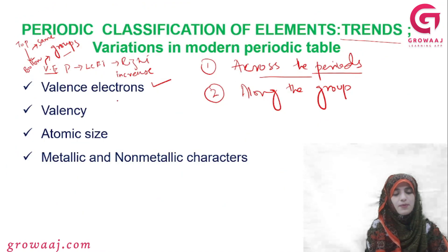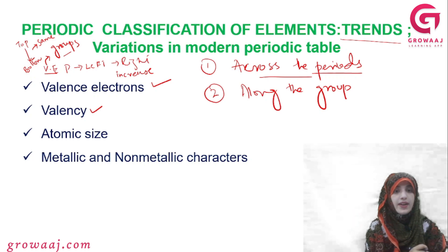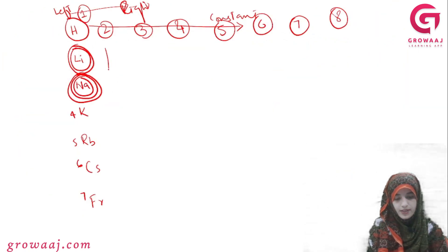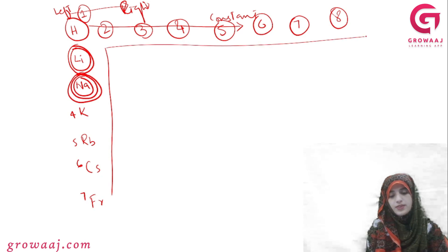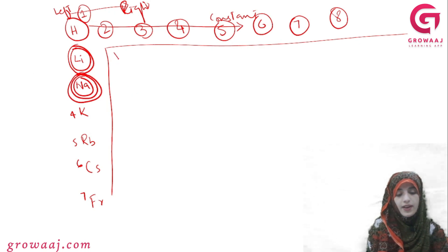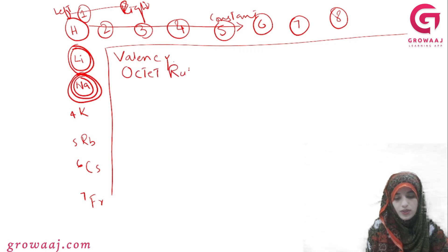So the valence electrons remain the same moving through a group, which is called valence. Now we will explain valence electrons and we will talk about the octet rule.